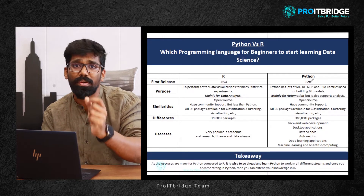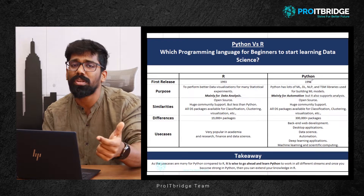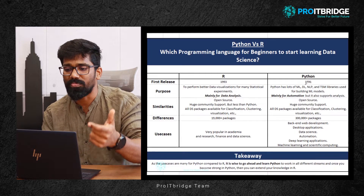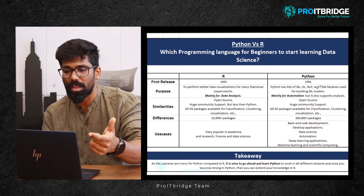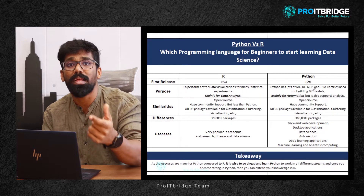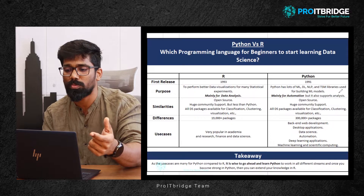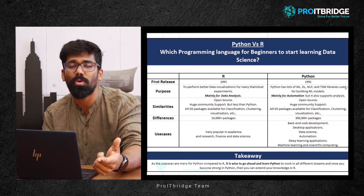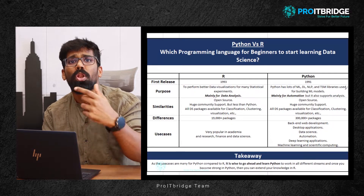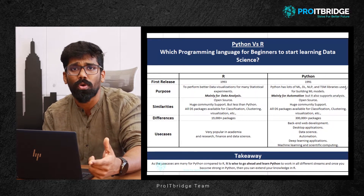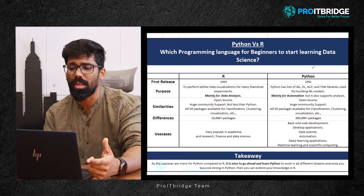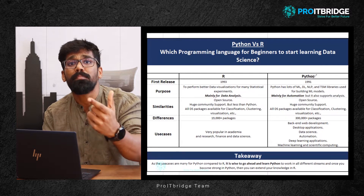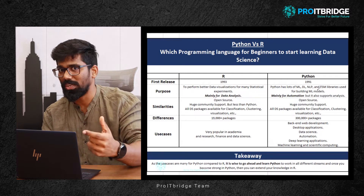Keeping that in mind, they released many machine learning related libraries, deep learning related libraries, NLP — that is natural language processing related libraries — and time series modeling libraries. A lot of libraries got released because Python's main purpose is automation.